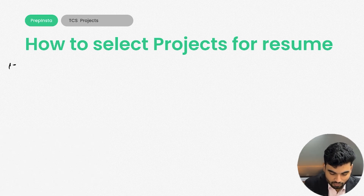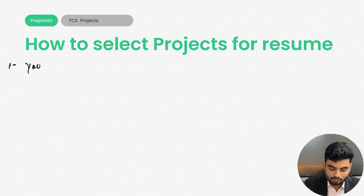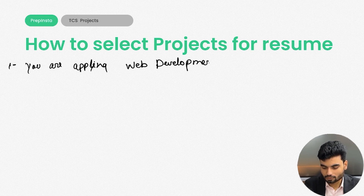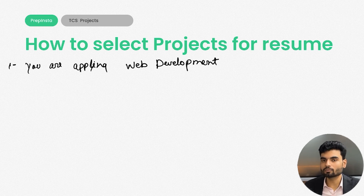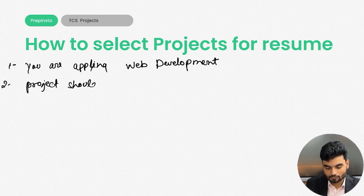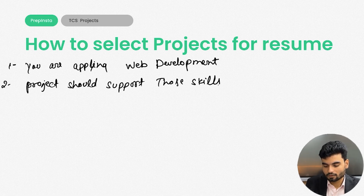When you mention a project, it should support your own skills. Let's say you're applying for web development — then you must have a project to support web development. Your project should support those skills listed on your resume. It shouldn't be like you're mentioning app development but adding a project for web development.